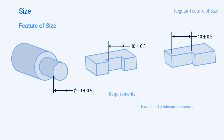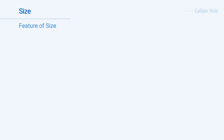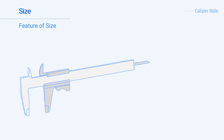To do this there are some defined requirements for a feature of size. Firstly, it must have a directly toleranced dimension — this is the size aspect of a feature of size. It must contain opposed points. And it must have an axis or a plane which can be repeatably derived. There is a rule of thumb that can help determine if an item is a feature of size or not. It is called the caliper rule.